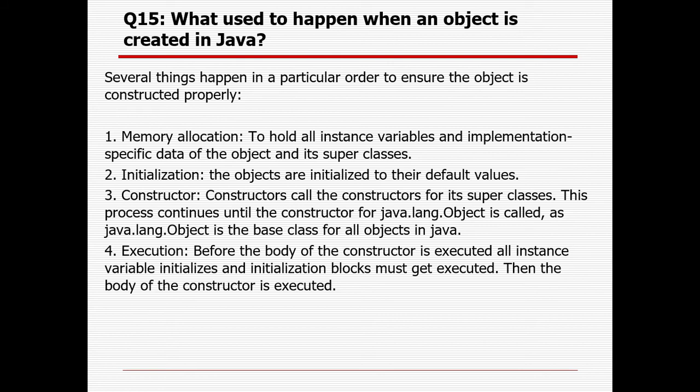What happens when an object is created in Java? First, memory allocation is done to hold all instance variables and data of the object and its superclasses. Then, initialization is done where the object variables are set to their default values. Next, the constructor is called, which calls the constructor for its superclasses, continuing until the constructor for java.lang.Object is called, as it is the base class for all objects. Finally, the actual execution starts — all instance variable initializers and initialization blocks execute before the constructor body.